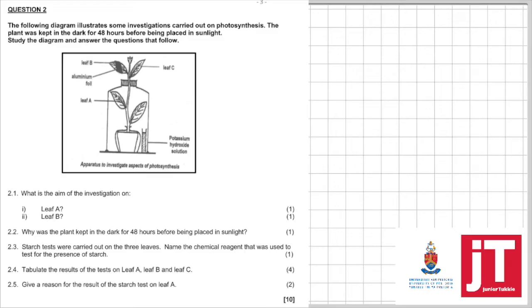2.2. Why was the plant kept in the dark for 48 hours before being placed in sunlight? The plant will always be kept in the dark for 48 hours to destarch the plant. And that is to prove that the glucose that is produced will turn into starch and that photosynthesis actually took place.